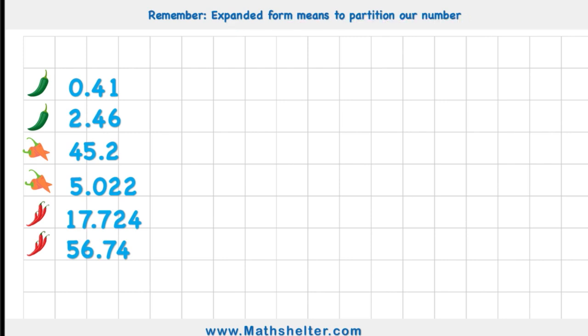the expanded form of decimals basically means to partition our number. So when we're looking at 0.41, we can see we have 0 ones, so we don't need to put anything for that. And then I have 4 tenths, so I'd have 0.4. And then I have 1 one hundredth, so I'm adding it to 0.01. Or in other words, 4 tenths added to 1 one hundredth. And it's as simple as that. That is how to partition or expand the form of a decimal number.